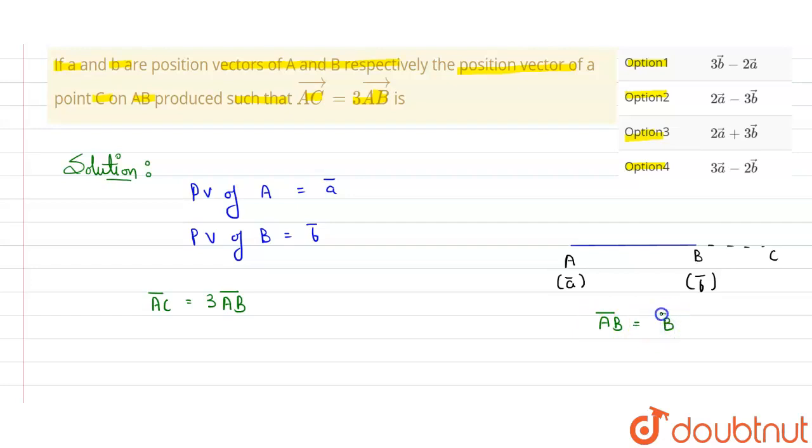This is the formula we know that whenever we need to find a vector, we subtract the position vector of backward, that is B, minus forward, that is A.